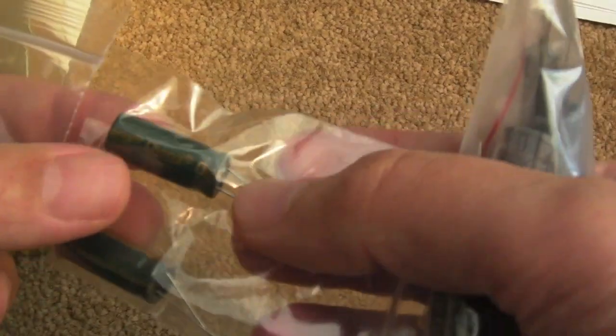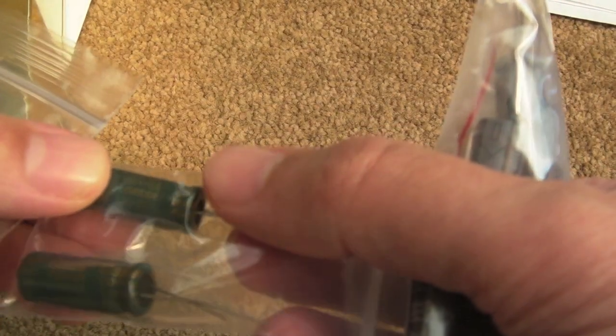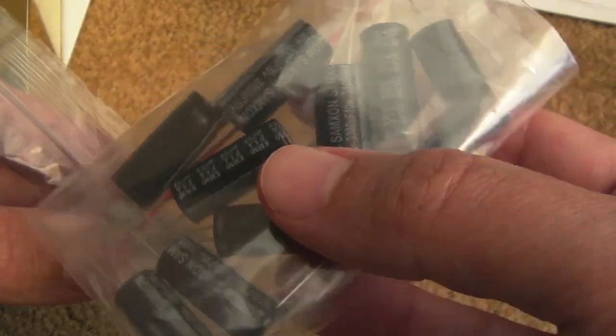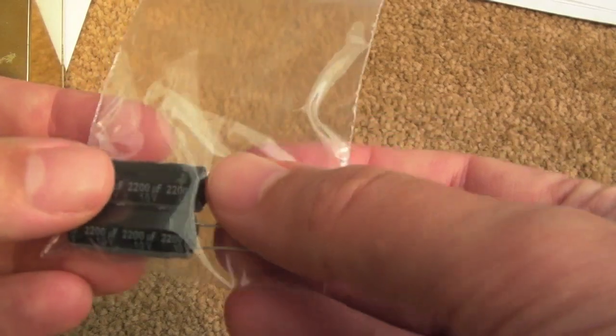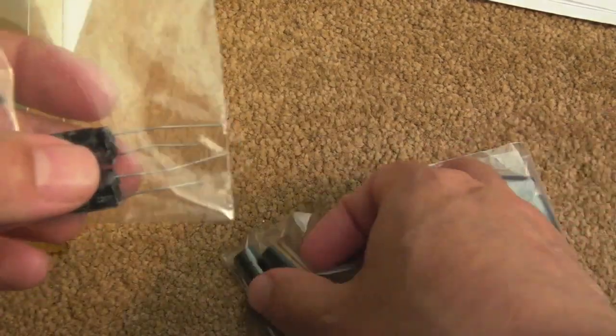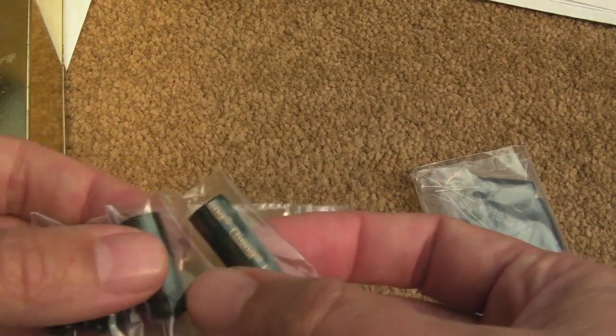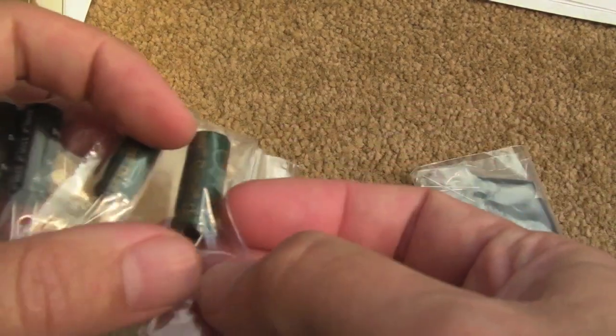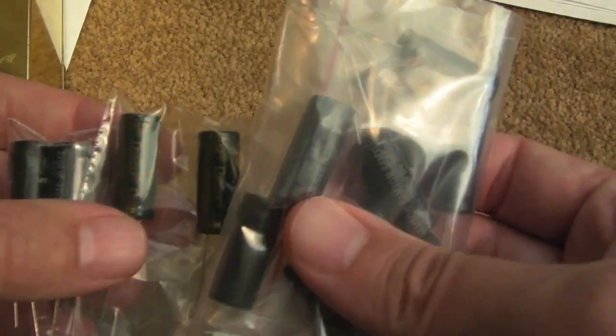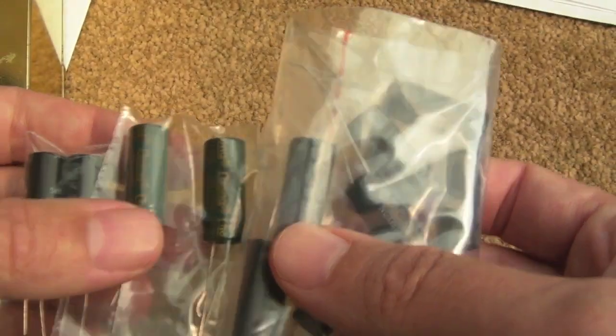So my components have arrived. I've got some 3300 microfarad low ESRs here at 16 volts, the same again at 10 volts, and then a couple of 2200s at 10 volts. And they're the right size - if you look they're about a centimeter in diameter and I think two and a half centimeters in height. So hopefully those should fit exactly the same as the ones I took out.